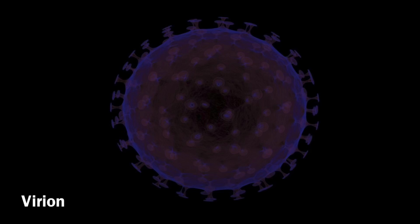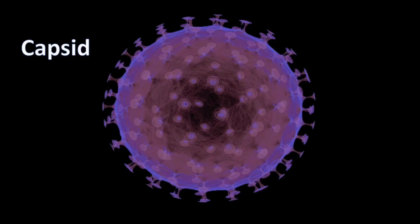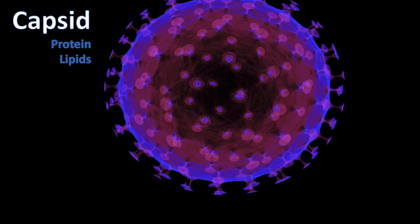They have a strong protective coat called capsid which is mostly made of protein with lipids or fats found around the protein membrane. This protective coat safeguards the genetic material which can either be DNA or RNA.